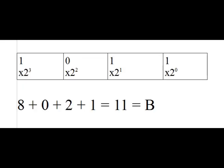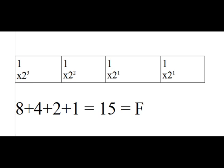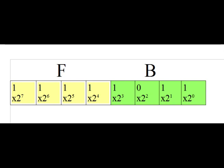Looking at the low nibble: it's 1+2+8 = 11 in decimal, so we use the letter B. The high nibble is at its maximum — 8+4+2+1 = 15 — so we use the letter F. Because 16 is a power of 2 (2 to the power 4), we can simply join these two numbers together to make a single hexadecimal number: FB. In the diagram you can see FB — the low nibble represents 2 to the powers 0 through 3, and the high nibble represents 2 to the power of 4 (16), then 32, 64, and so on.